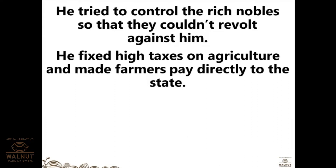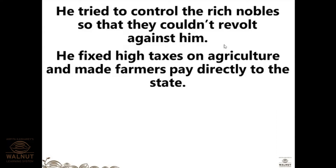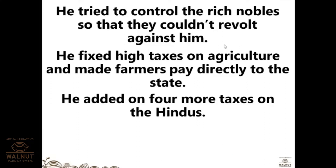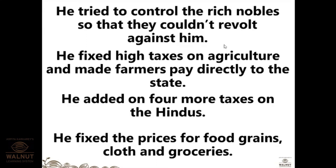He fixed high taxes on agriculture and made farmers pay directly to the state. In other kingdoms there were mediators — leaders or some people who collected land revenue — but here he removed those intermediaries so farmers paid taxes directly to the state with no mediator between them. He also added taxes on the Hindus and fixed prices for goods, food grains, clothes, and groceries.